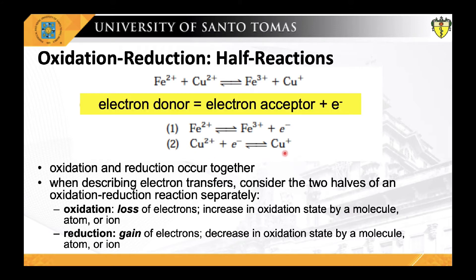In redox reactions we can write a general equation: electron donor ⇌ electron + electron acceptor. In reversible half-reaction one, Fe²⁺ is the electron donor and Fe³⁺ is the electron acceptor — together they constitute a conjugate redox pair. Similarly, in half-reaction two, Cu²⁺ is the electron acceptor while Cu⁺ is the electron donor — together Cu²⁺ and Cu⁺ constitute a conjugate redox pair.